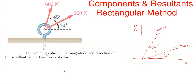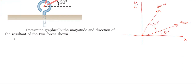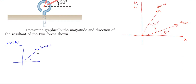Using the rectangular method, we're going to look at each force individually and break it up into its x and y components. Let's start with the 600 first. If we redraw it in an x-y coordinate system, it has a total angle of 45 plus 30, which gives me 75 degrees off of the x-axis.